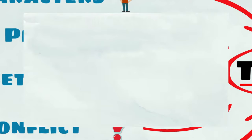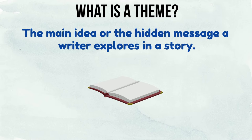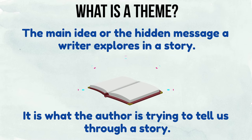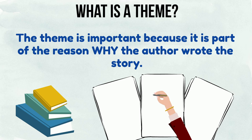A theme is the main idea or the hidden message a writer explores in a story. It is what the author is trying to tell us through a story. The theme is important because it is part of the reason why the author wrote the story.